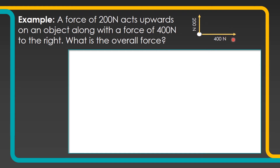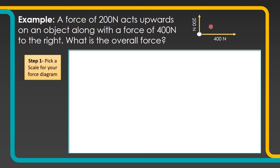You can probably work out that it's going to be sort of upwards to the right, combining those two forces together — probably more towards the right than upwards because the force to the right is bigger. So if we were to draw a guess of what that force might look like on this diagram, you'd probably expect it to look something like that.